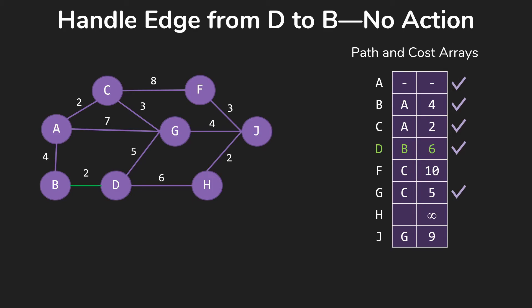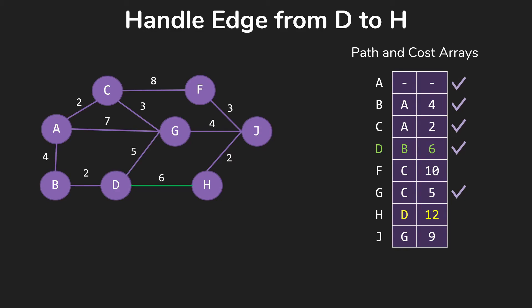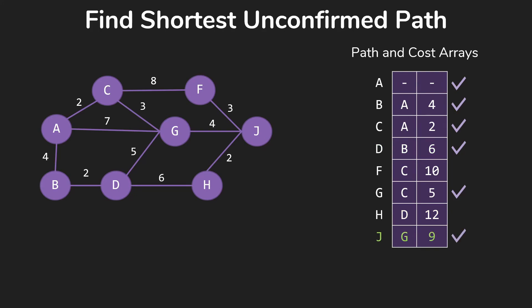So then we go through our edges out of D. We don't do anything about B, it's already in our table, same for G. H, which we now add to the array, the information we can get to H from D for 12, 6 plus 6. That covered our edges out of D, so now we check our loop conditions, we're still not done.